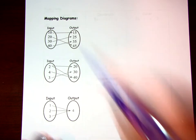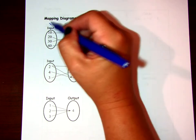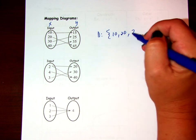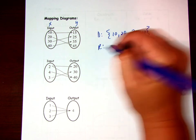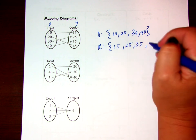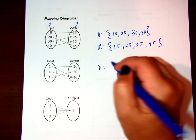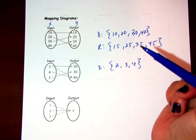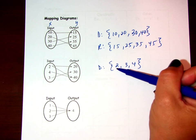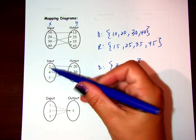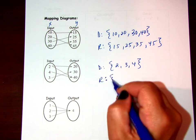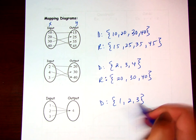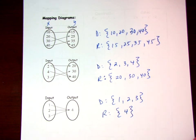The same applies for a mapping diagram. When given inputs and outputs in a mapping diagram, list them out in set notation from least to greatest. The mapping diagram already condenses repeated values, so each value only appears once. Make sure you write them least to greatest even if the diagram lists them out of order — for example, if the input column shows 2, 4, 3, write them as 2, 3, 4 in set notation.